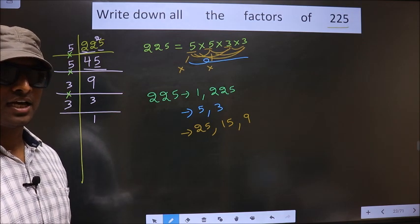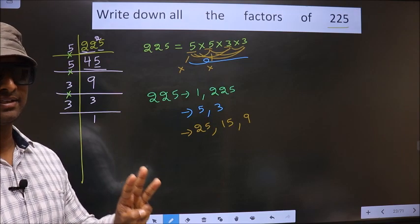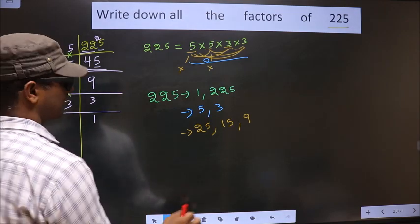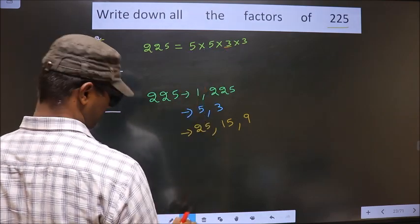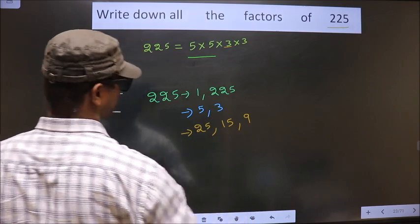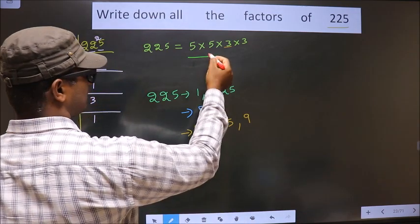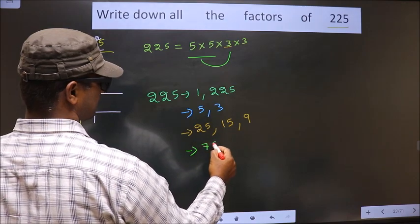Next. Now, you take a combination of three numbers. How do we take? First, I take these two numbers. 5×5, 25. I combine with 3. We get 75.